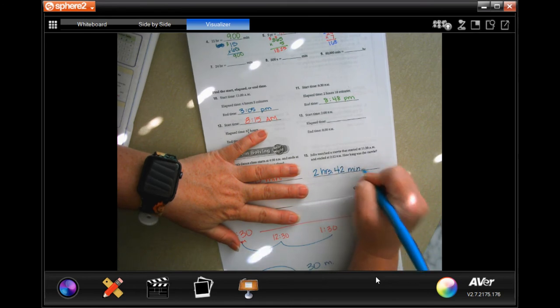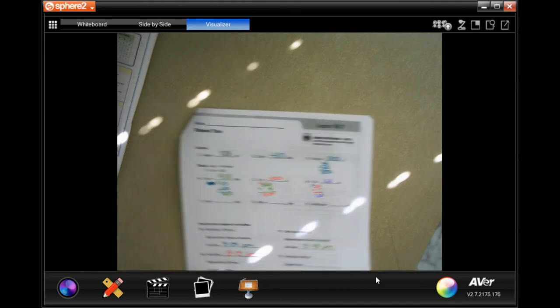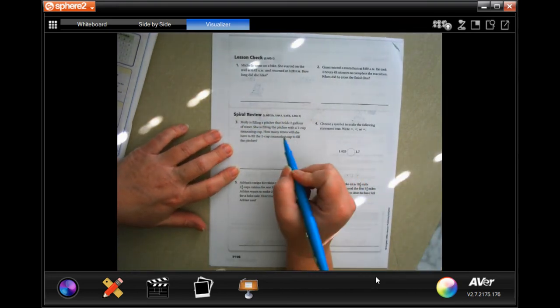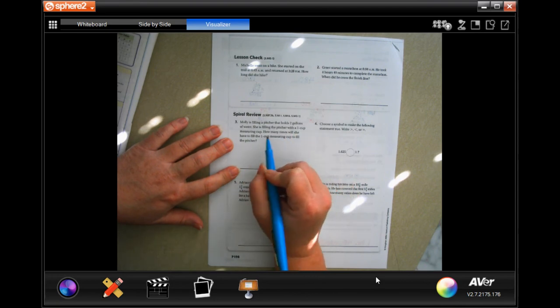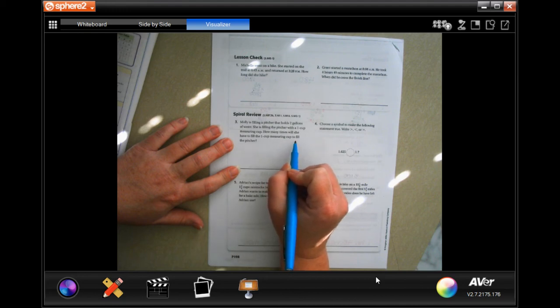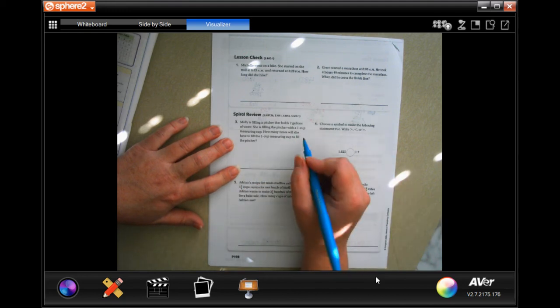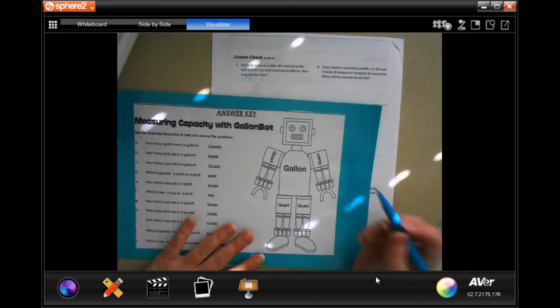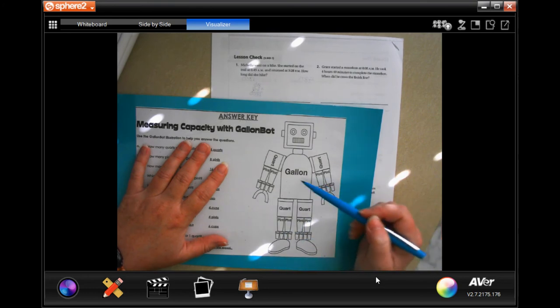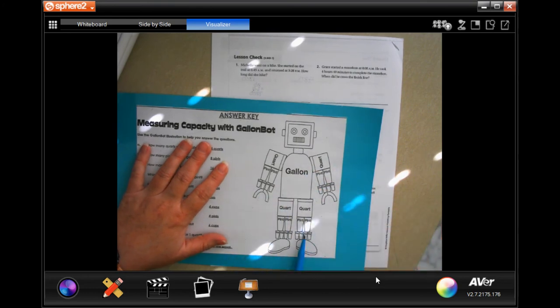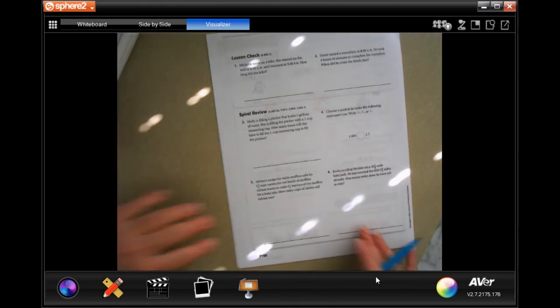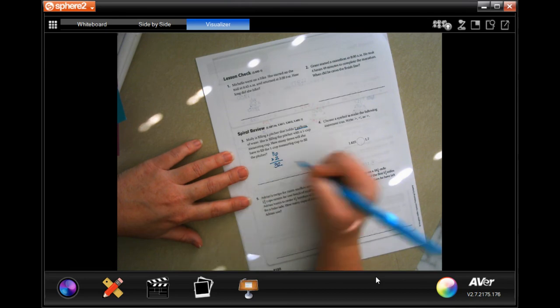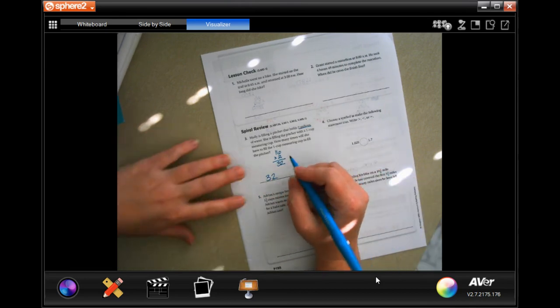We're going to go over to the back for lesson check and spiral review. Molly is filling a pitcher that holds 2 gallons of water with a 1 cup measuring cup. How many times will she fill it? We need to know how many cups are in one gallon. We're going to pull out our robot - 4, 4, 4, and 4, that's 16 for one gallon. She has 2 gallons so we multiply by 2. 16 times 2 is 32. 32 fills.